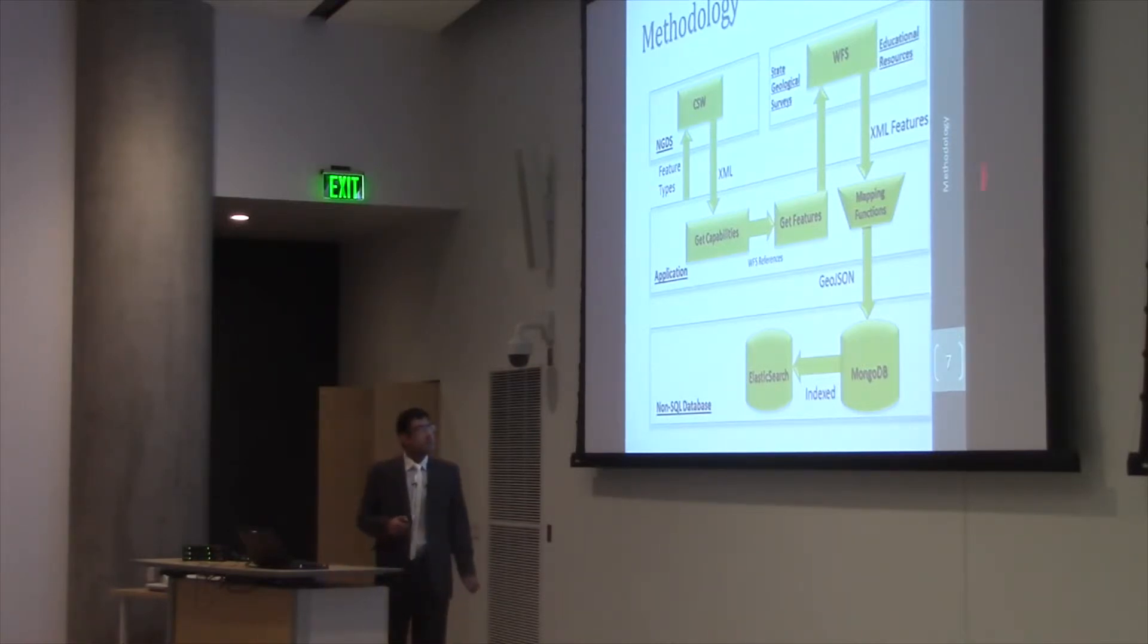In return, I get the XML feature files. I pass those XML features files through the mapping function to remove the redundancy of the data and remove the unnecessary attributes from the data. I use GDAL library here to convert the XML features into the GeoJSON format. And once the features are converted into the GeoJSON format, I save those files into the MongoDB. After saving them in the MongoDB, I extract the GeoJSON features from those files and index them into the Elasticsearch.